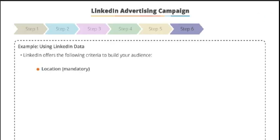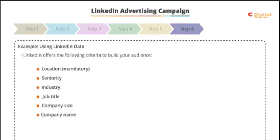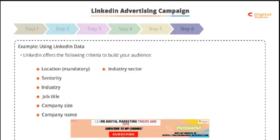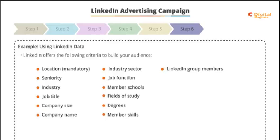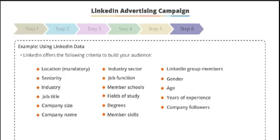There's location, which is a mandatory segment. But then we've got seniority, industry, job title, company size, company name, industry sector, job function, member schools, fields of study, degrees, member skills, LinkedIn group members, gender, age, years of experience, and company followers.